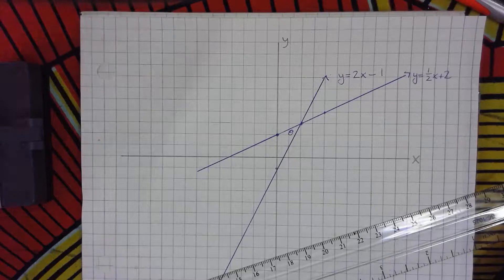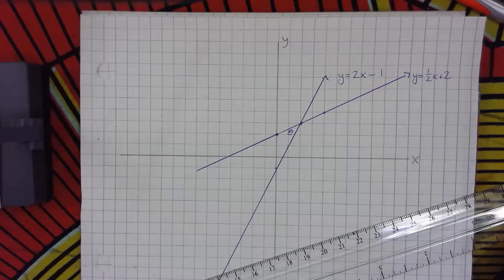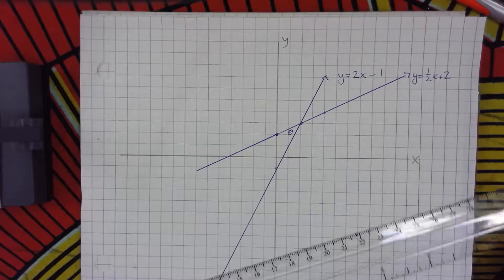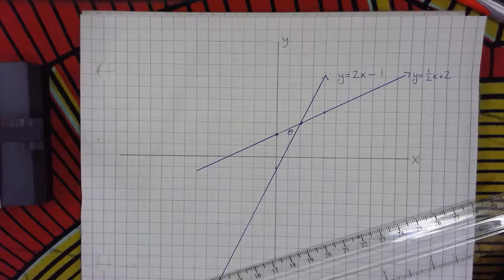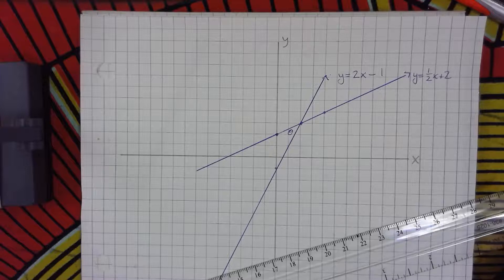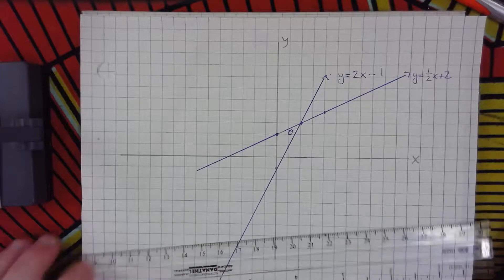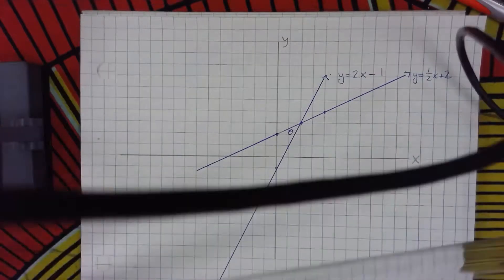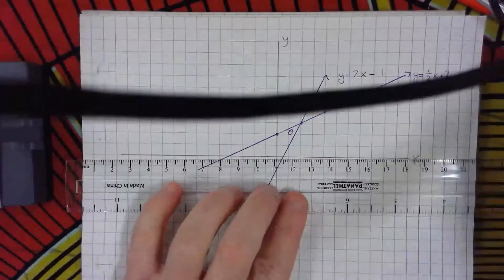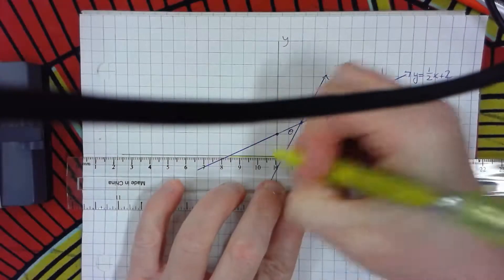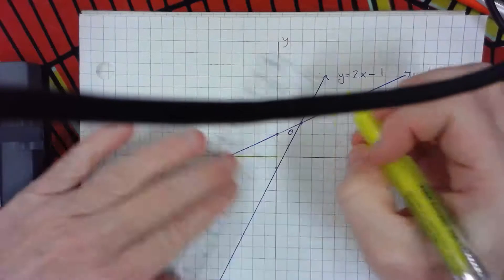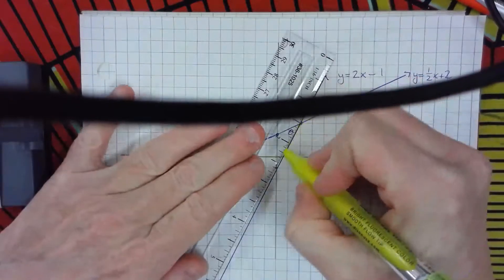In order to find that angle, I want to think about slope as rise over run. If I can create a triangle using my slope, then I can use opposite over adjacent — that is, tangent — to solve for the angles. What I've noticed is that the two lines form a triangle with the x-axis.